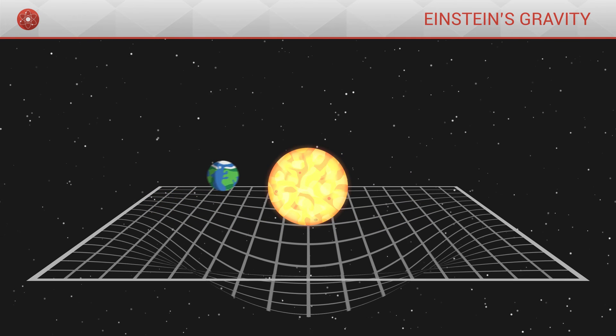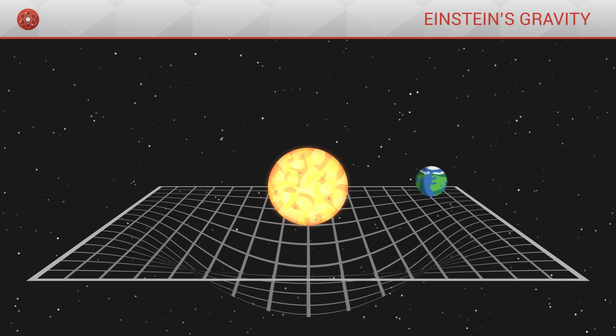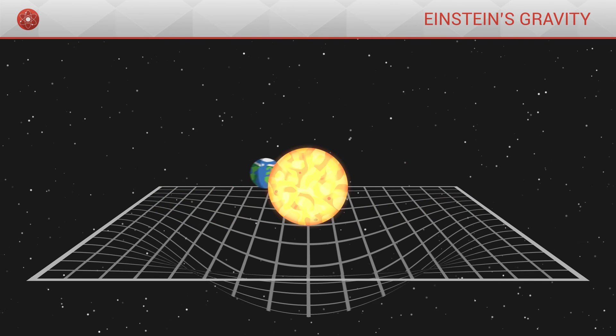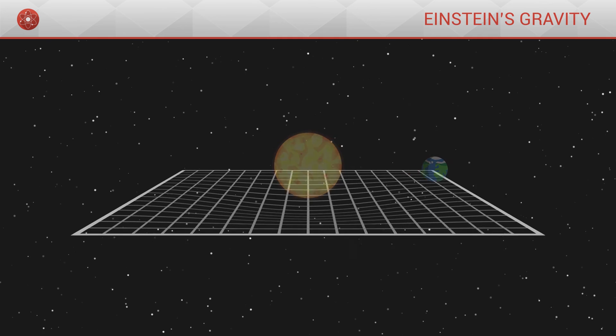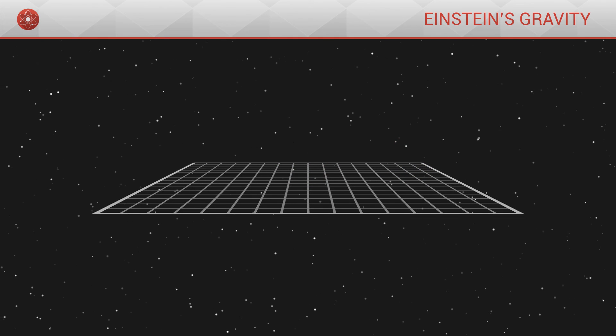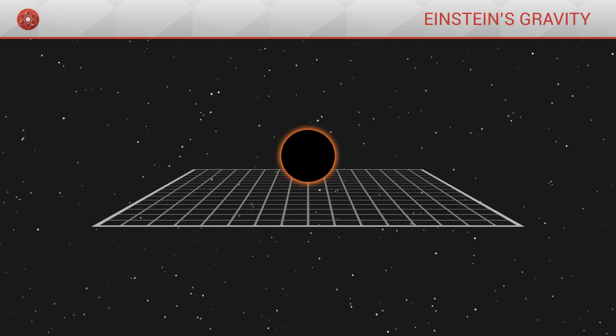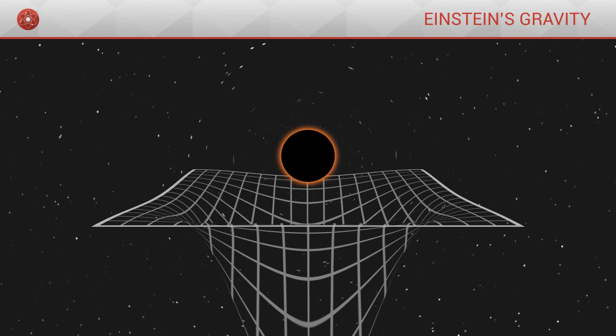Just like with Newton, Einstein's theory predicts the movement of planets around the Sun. However, being more thorough, this theory has also enabled the discovery of many other scientific novelties, like the fact that a very important density can lead to the appearance of what we call a black hole.